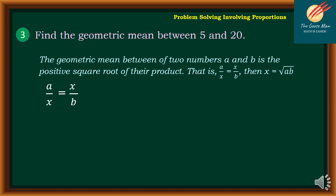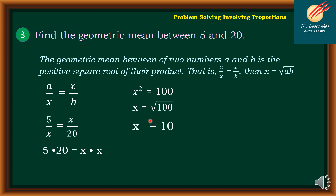So we have a over x equals x over b, where a equals 5 and b equals 20. Substituting, we have 5 over x equals x over 20. Using the cross products, 5 times 20 equals x times x, so x squared equals 100. Extracting the root of both sides, x equals the square root of 100, which is x equals 10. Therefore, the geometric mean is equal to 10.